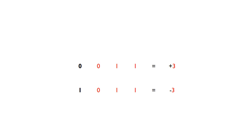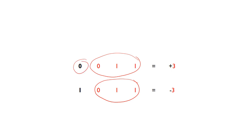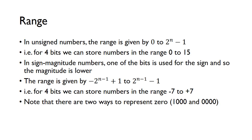For example, 3 in binary is 0, 1, 1. If the number is positive, you just stick a zero in front of it. If it's negative, you just put a 1 in front of it — just like writing plus 3 and minus 3. The sign bit represents the sign, but the magnitude bits are the same for each.